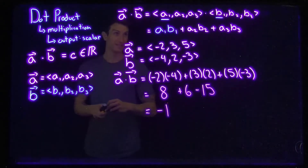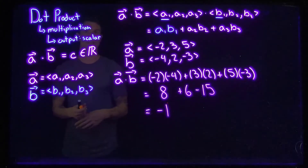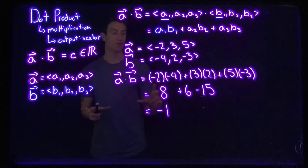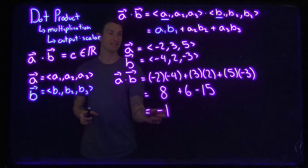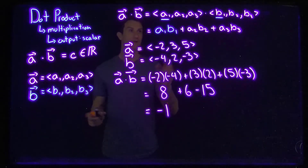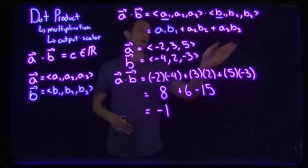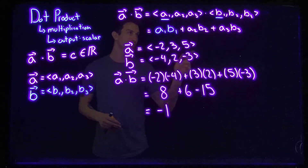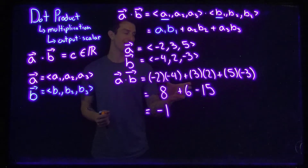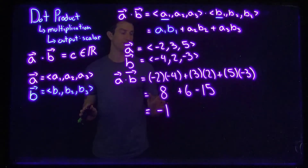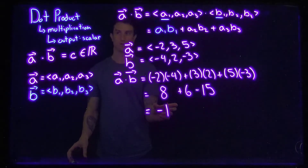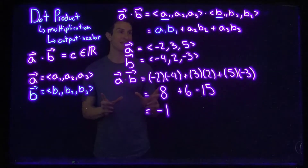So after all of that: 8 plus 6 is 14, minus 15 gives us negative 1. Now maybe some of us are looking at this negative 1 going, 'what does that mean?' — what's the interpretation? Once we get to some applications we'll discuss what this negative 1 is telling us. For right now we just want to go through the calculation. In the next part of the video we'll get into applying the dot product to calculate the angles between two vectors.